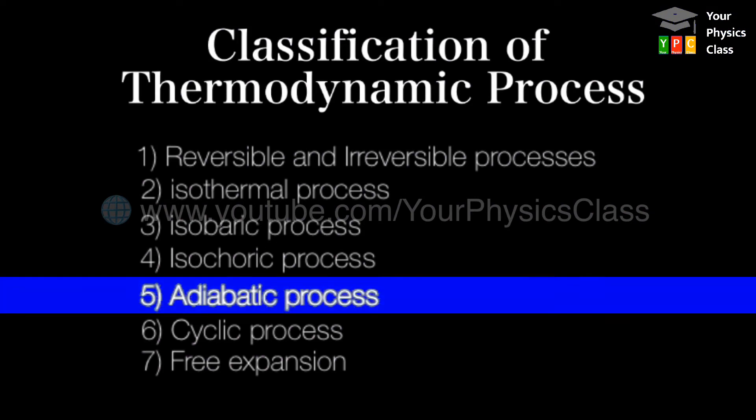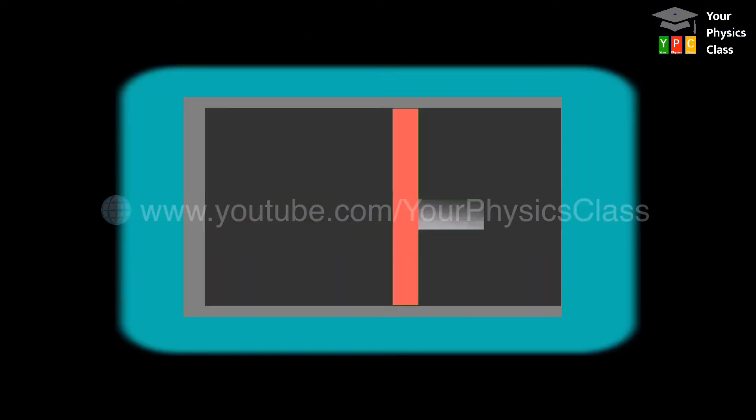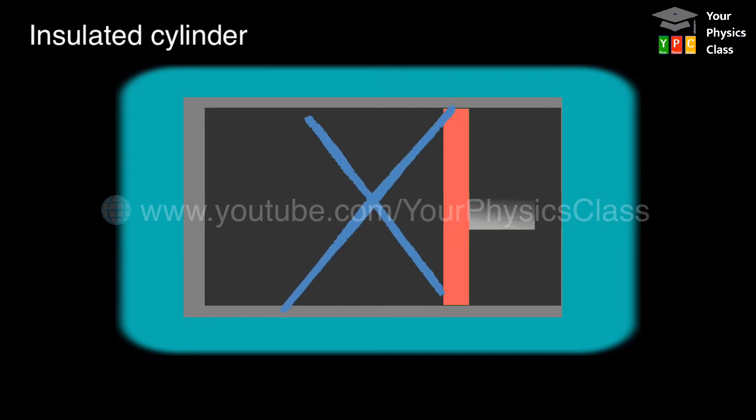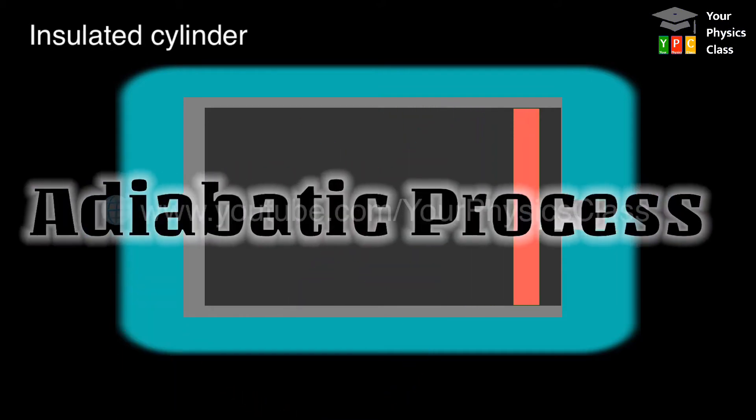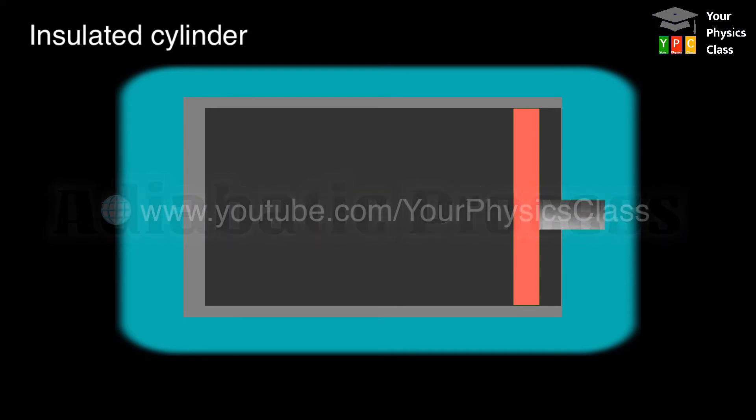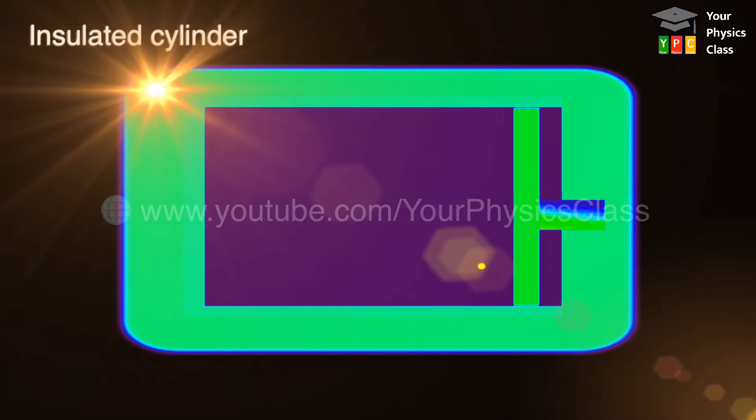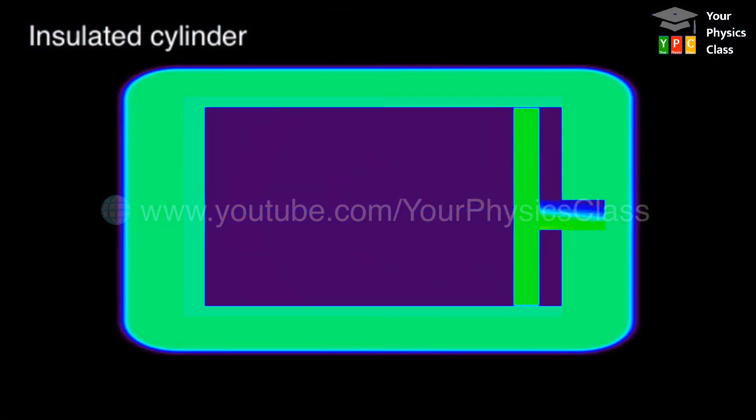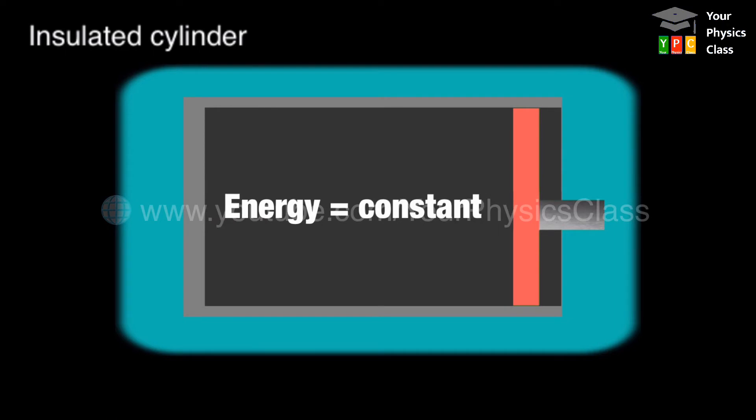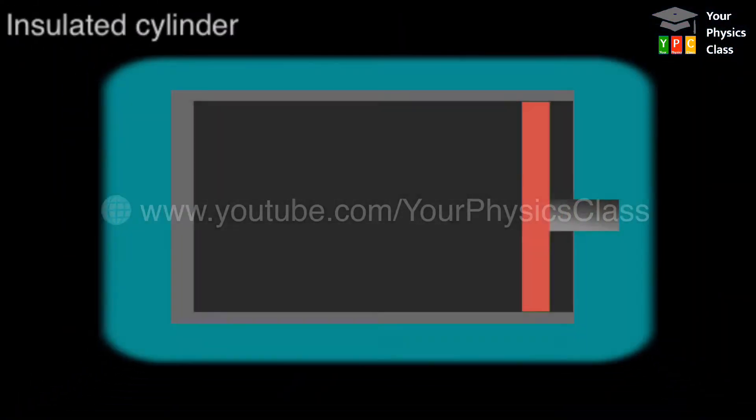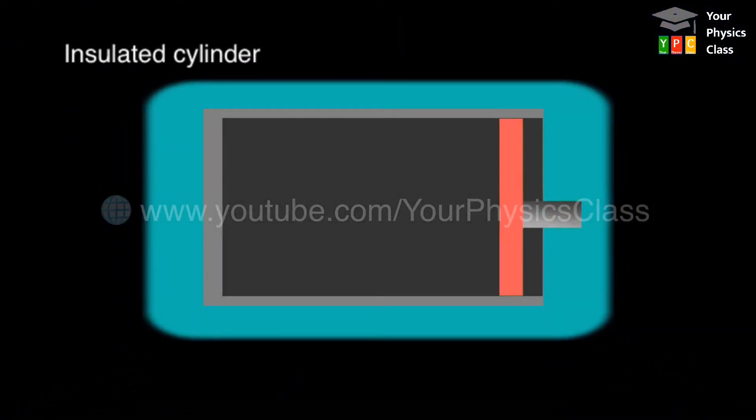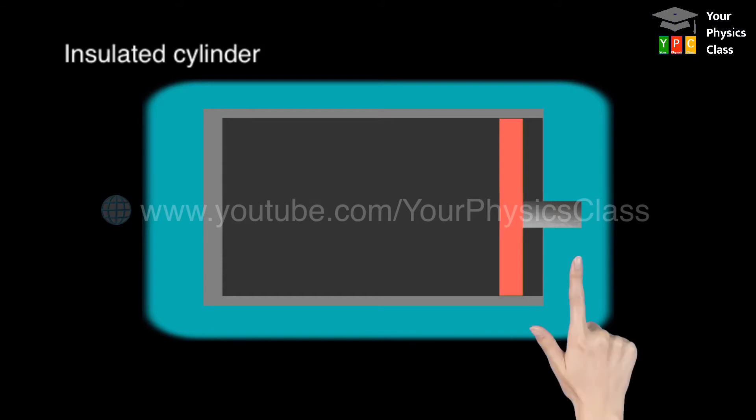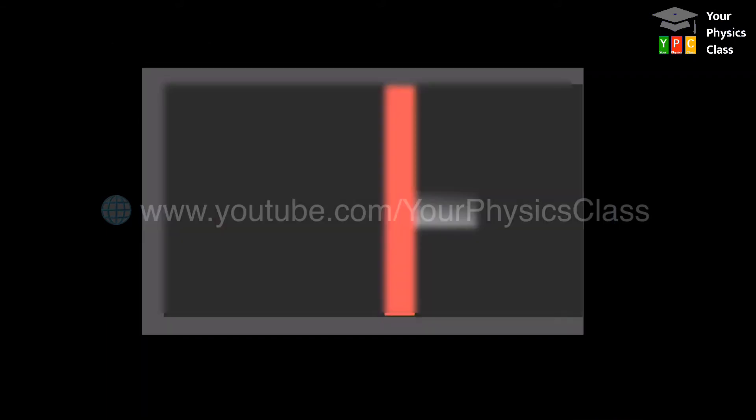Let us now see adiabatic process. The thermodynamic process during which there is no transfer of heat from or to the system is called adiabatic process. This means if in a thermodynamic process no heat goes in from outside or no heat goes out from inside, then that process is called adiabatic.